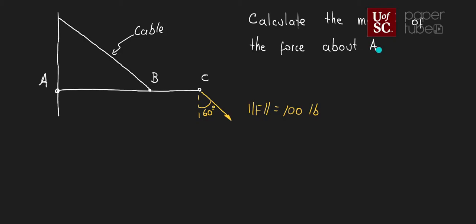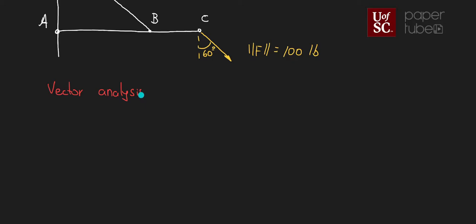I'm going to solve this in two different ways. First, I'll do vector analysis using the equation M = R × F, where R is the position vector describing the position of the force relative to the point of interest, and F is the force in Cartesian vector form. Later I'll do scalar analysis, and when I compare the results at the end we should obtain exactly the same answer.